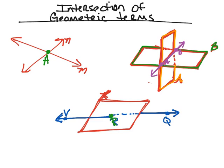So these are the three scenarios we're going to come across. We have two lines that intersect — they intersect at a point. If we have two planes that intersect, they intersect at a line. And finally, if we have a plane and a line, they're always going to intersect each other at a specific point.